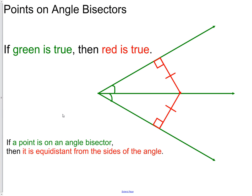That is our next statement: if a point is on an angle bisector, then it is equidistant from the sides of the angle. Notice how we are creating these congruent triangles — two triangles that look exactly the same size.